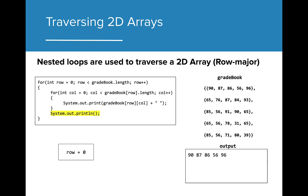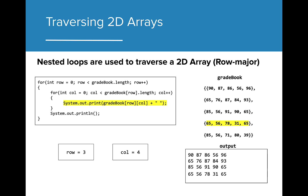Now the inner loop ends, and a print line is called to start the next array on the next line in the console. The outer loop now increases the value of row by 1, which will allow the gradebook to access the array at index 1. The inner loop executes again and initializes column. Now index 0 in the second array in the 2D array, which is value 65, is printed to the console. This for loop continues to iterate until every value in the second array in the 2D array is accessed and printed to the console. As the row continues to increase, each set of values will be printed to the console, until the length of the 2D array is reached.